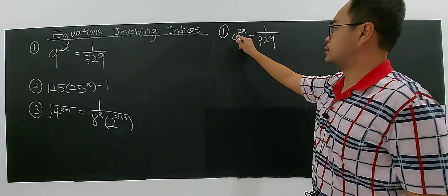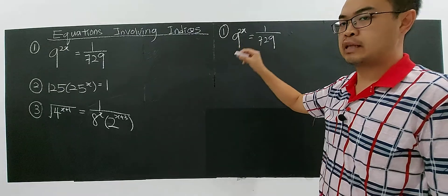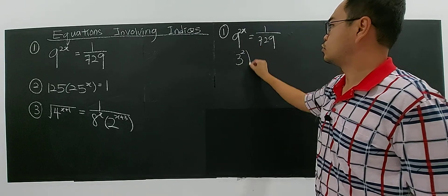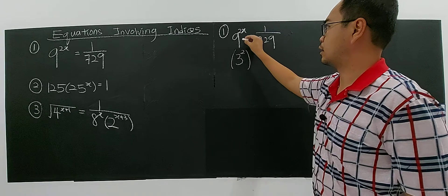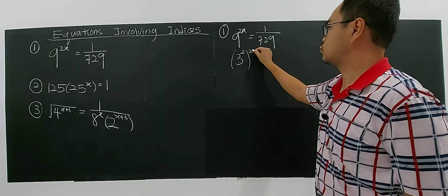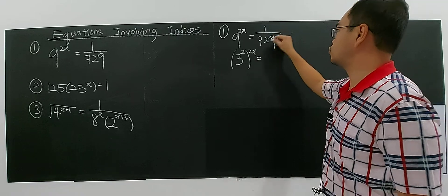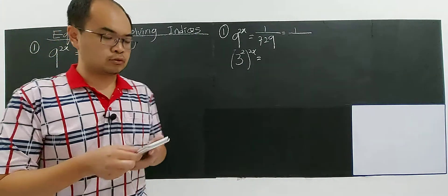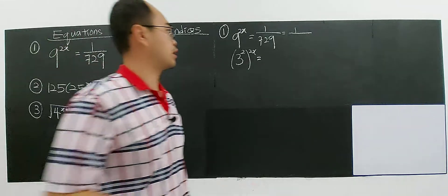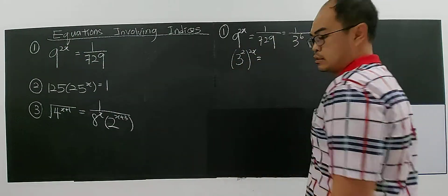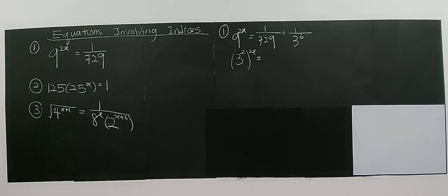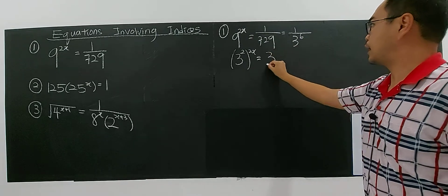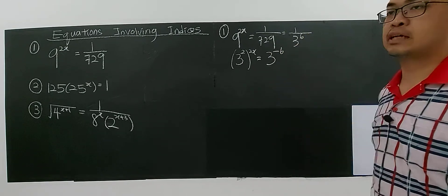9 and 729 have a common base. You know that 3 to the power of 2 is 9. So 9 to the power of 2x becomes 3 to the power of 2 times 2x, which is 3 to the power of 4x. And 729 is 3 to the power of 6. You can bring it to the numerator, but the index changes sign — it becomes negative 6.